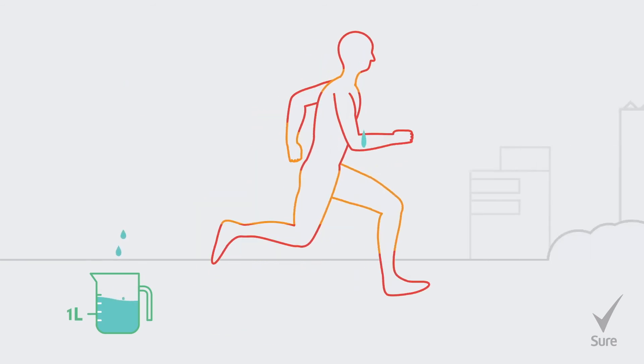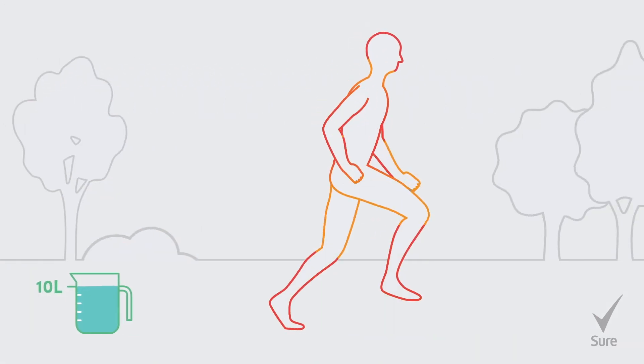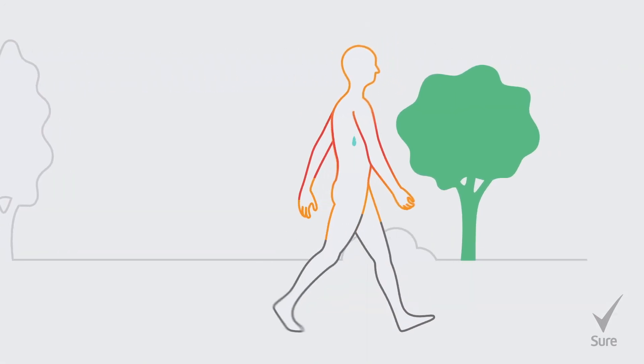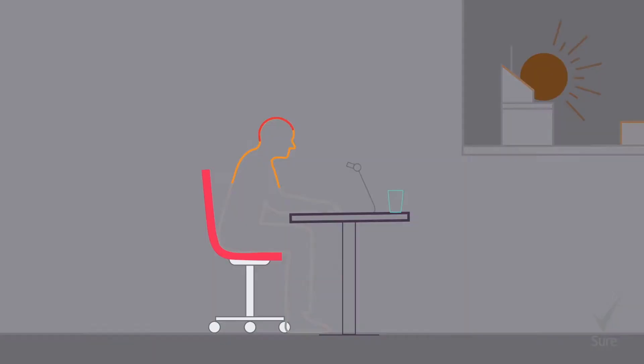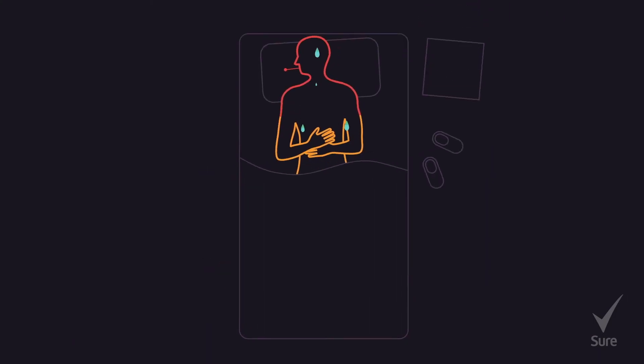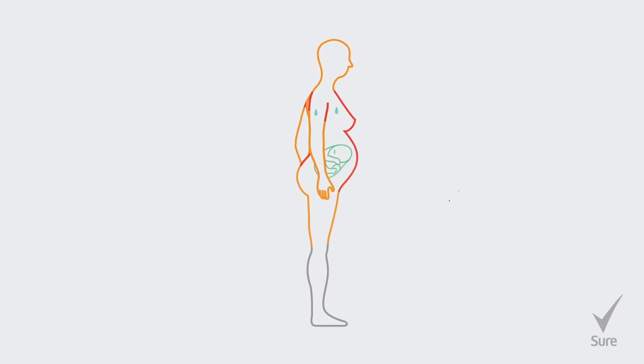When we're exercising, that can increase to 10 liters a day. Other factors can make us sweat more too, like stress and strong emotions, illness or fever, and reactions to medication or surgery. Women sweat more when they're pregnant and during menopause.